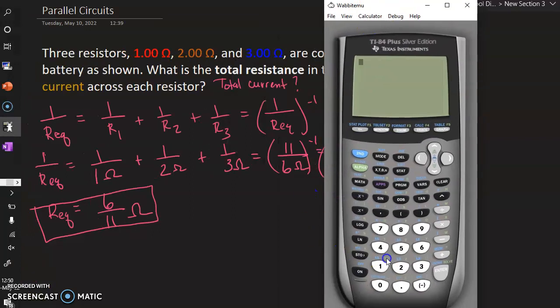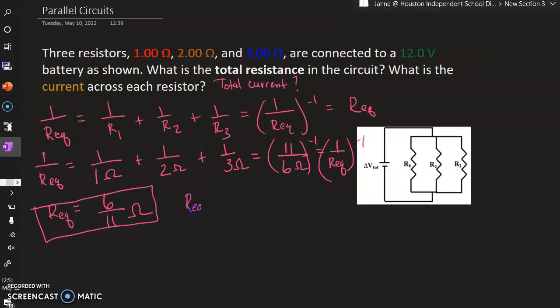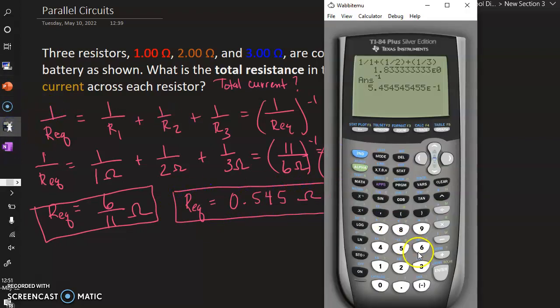Okay, so I can do 1 divided by 1 plus 1 divided by 2 plus 1 divided by 3, and this gives me 1.833. This value is 1 over REQ. So to get the equivalent resistance, I can raise that answer to the negative 1 power. That's to invert it, and I get 0.5454 or 5.4545 E negative 1. So equivalent resistance can also be written as 0.545 ohms. So if you do 6 divided by 11 in the calculator, you see you should get the same answer.